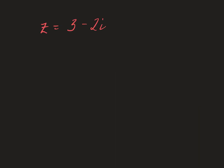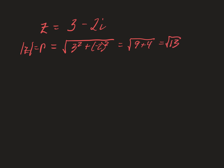Let's practice writing a few complex numbers in polar form. The first thing we want to do is find r. R is going to be the square root of 3 squared plus negative 2 squared, which is the modulus of our complex number. So the modulus of z equals r, which is the square root of 9 plus 4, or the square root of 13. Then we'd like to find the angle. Theta is equal to the inverse tangent of b over a, which is negative 2 over 3.